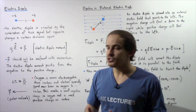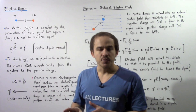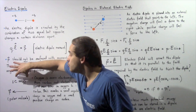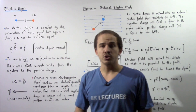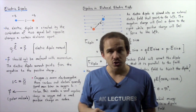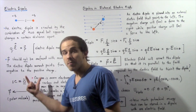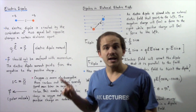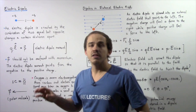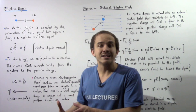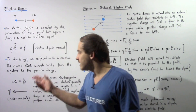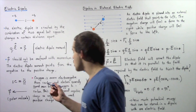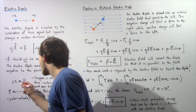Let's examine one particular application of the electric dipole and the electric dipole moment in nature. One example is molecules. Consider this neutral carbon monoxide molecule composed of a carbon atom and an oxygen atom. The overall net charge on this molecule is zero, but the oxygen is more electronegative than the carbon, meaning the oxygen pulls electrons closer to itself. As a result, electrons spend more time on the oxygen atom, developing a small negative charge there and a small positive charge on the carbon atom.